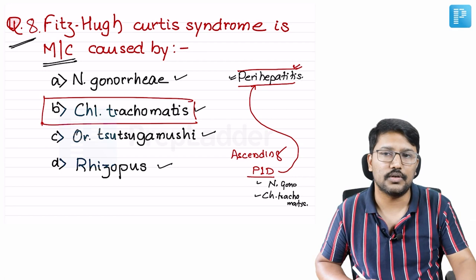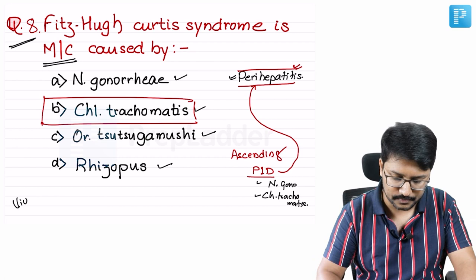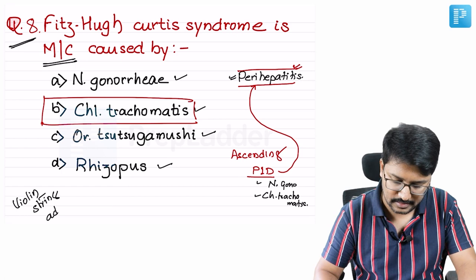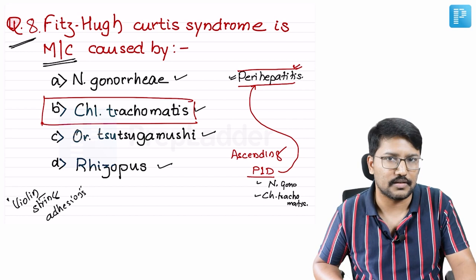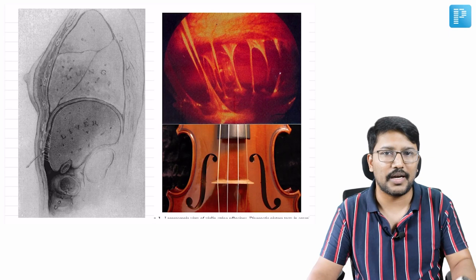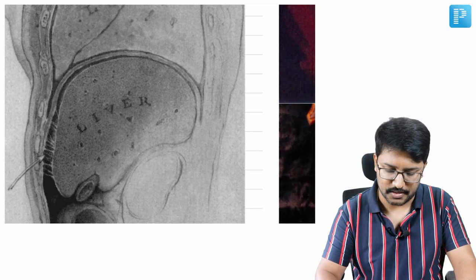Additional points to know about Fitzhugh-Curtis syndrome: you might hear the term 'violin string adhesions.' Whenever an MCQ talks about violin string adhesions, think about Fitzhugh-Curtis syndrome. As mentioned, there are exudative secretions that bring in adhesions.